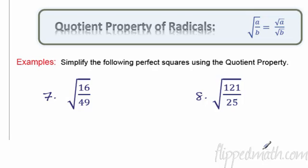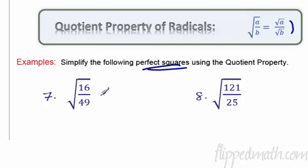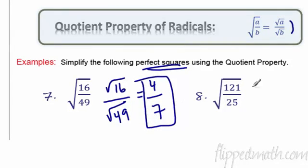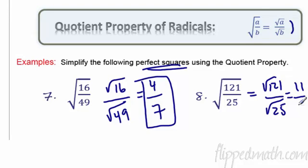Let's look at the quotient property — you can divide the top and bottom of a fraction. Number 7: the square root of 16 over the square root of 49 equals square root of 16 over square root of 49, which is 4 over 7. Number 8: square root of 121 over the square root of 25 equals 11 fifths.